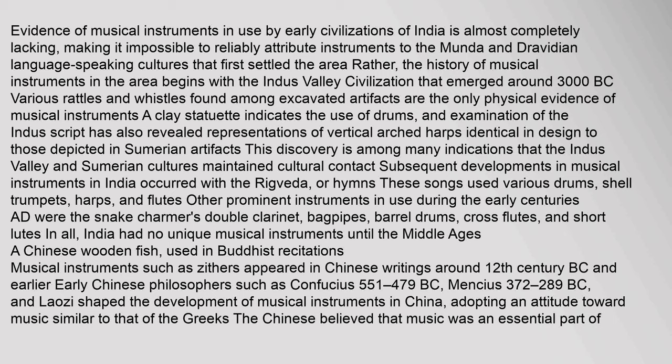Subsequent developments in musical instruments in India occurred with the Rigveda hymns. These songs used various drums, shell trumpets, harps, and flutes. Other prominent instruments in use during the early centuries AD were the snake charmer's double clarinet, bagpipes, barrel drums, cross flutes, and short lutes. In all, India had no unique musical instruments until the Middle Ages.